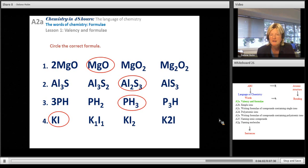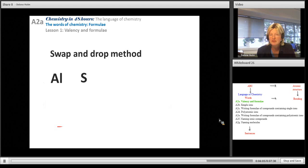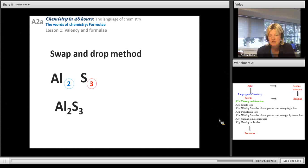We don't always want to write the hooks. So a swap and drop method is a quick way of doing it. Write the valencies and then swap them across. So the valency for sulfur gets dropped down to the bottom of aluminium, and the valency for aluminium gets dropped down to the bottom of sulfur. That gives you the ratio of 2 aluminiums to 3 sulfurs, so my formula is Al2S3.